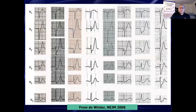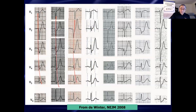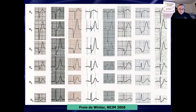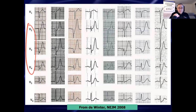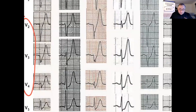I'll show you a handful more examples from some of the articles that have been published. This is from the 2008 article — here are eight different cases of de Winter T wave pattern. Take a look at the pattern so that it gets burned into your memory. Mid-precordial leads V2, V3, V4 — those are your money leads. It might extend to the other precordial leads, but V2, V3, V4 are your money leads.